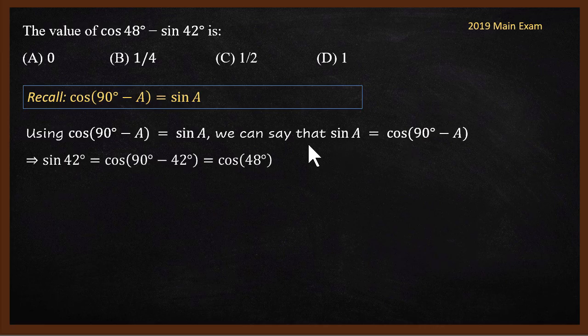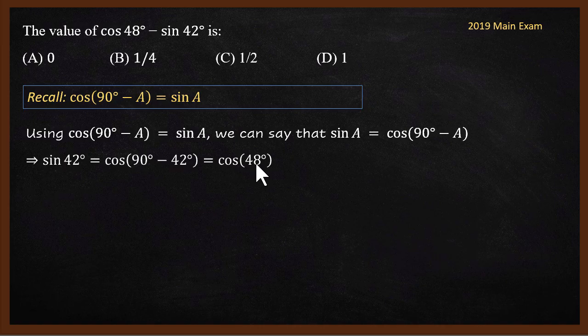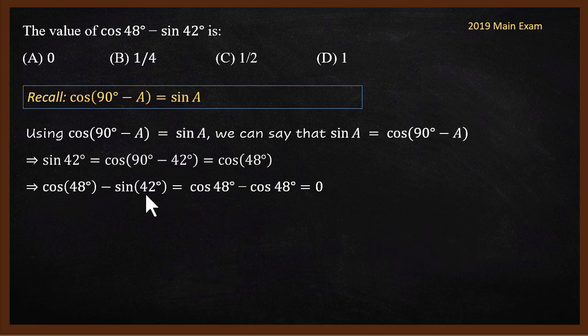That tells us that sin 42° can be written as cos(90° − 42°), which is cos 48°. So cos 48° minus sin 42° becomes cos 48° minus cos 48°, which equals 0.